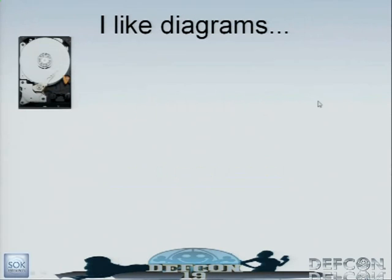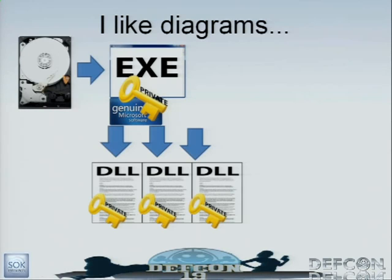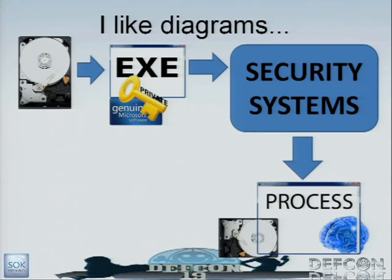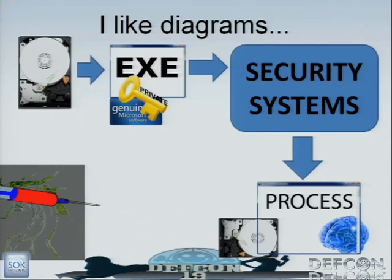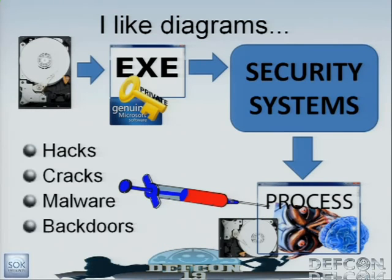I really like diagrams and pretty things. When you are on disk and you run an executable, it spins up a bunch of valid DLLs. They all go through the security systems of Microsoft and .NET, become a process, and all security systems have already completed. You inject in and it drops in your attack — your hacks, cracks, malware, and backdoors. You're injecting after security systems have finished. I've seen two security systems used by two companies that can do nothing against this. Every security system I'm going to talk about — injecting in memory gets right past it.